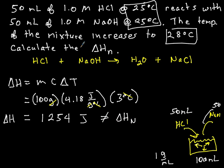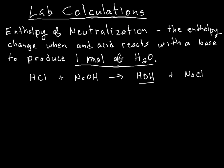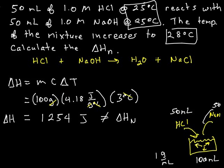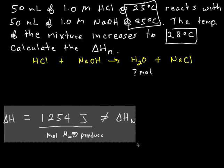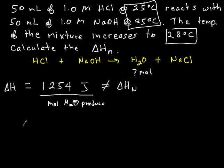Because the enthalpy of neutralization, if we go back to the previous page, is the heat released per mole of water produced. So we need to divide this 1254 by the moles of water produced in this chemical reaction between the HCl and the NaOH. We need to know how many moles of water is produced. Now that gets us back into stoichiometry.